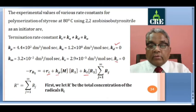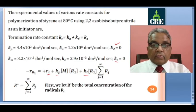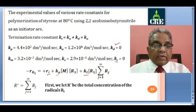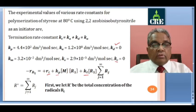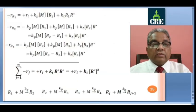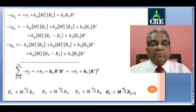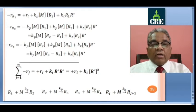The total concentration of radicals, R* = summation of [Rj] for j = 1 to infinity. Using this notation, the overall rate of disappearance of R1 radicals (keeping only non-negligible terms) simplifies to: minus R_R1 = plus R_I (initiation) + K_P·[M]·[R1] (propagation) + K_T·[R1]·R* (termination), where K_T = K_A since K_D = 0.